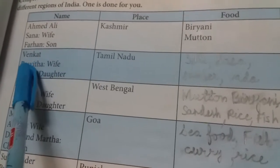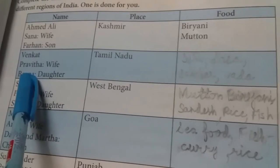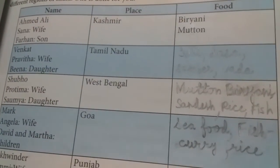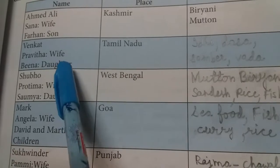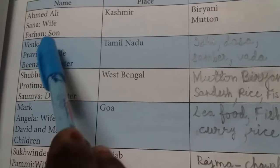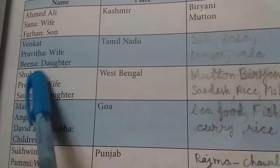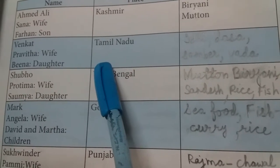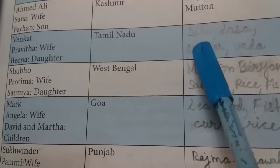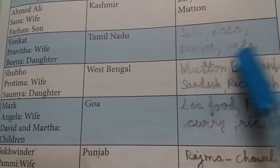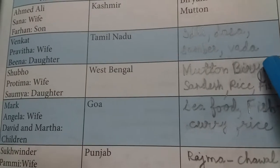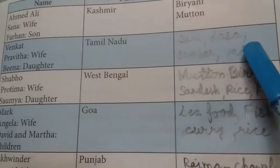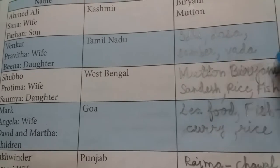The second family: husband's name is Venkat, wife's name is Praveedha, and daughter's name is Beena. Venkat, Praveedha, and Beena belong to Tamil Nadu. Their favorite food is Idli, Dosa, Sambar, and Vada.